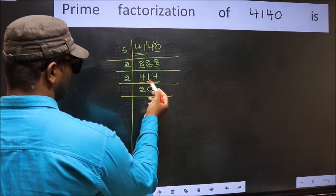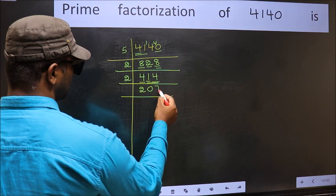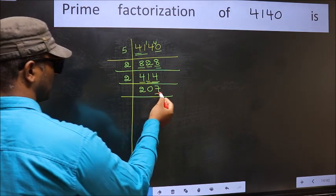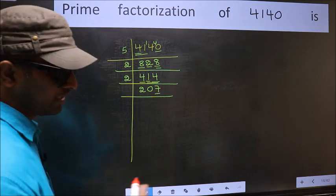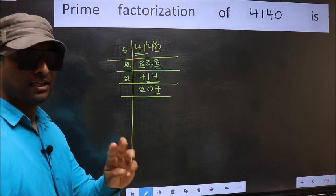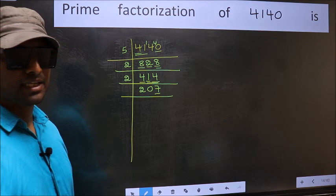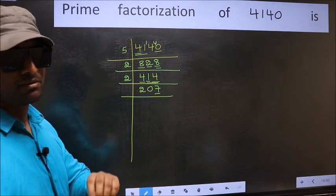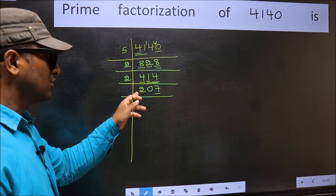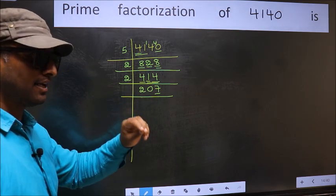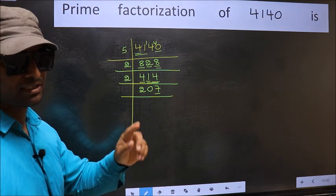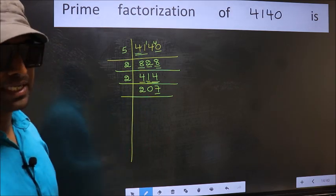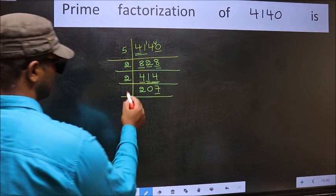Now 14. When do we get 14 in 2 table? 2×7 is 14. Last digit 7 not even, so not divisible by 2. Next prime number 3. To check divisibility by 3, we should add the digits. What I mean is 2+0+7. We get 9, and 9 is divisible by 3. So this number also divisible by 3. So take 3 here.